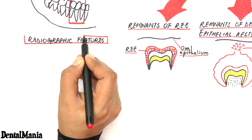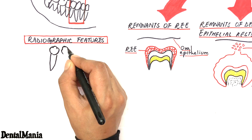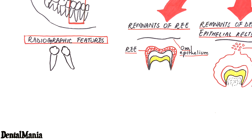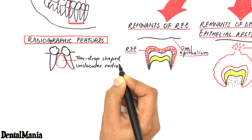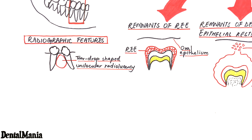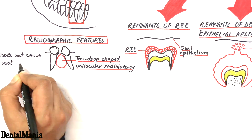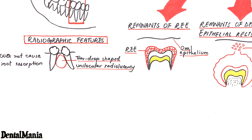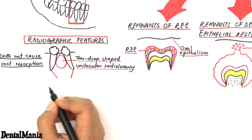Radiographically, the cyst shows a small unilocular and teardrop-shaped radiolucent area located on the lateral aspect of the root. The cyst never causes resorption of adjacent roots, but it may cause divergence of the roots.